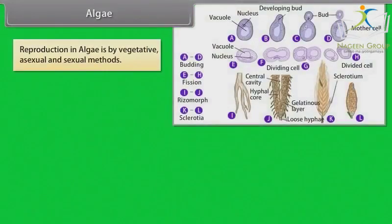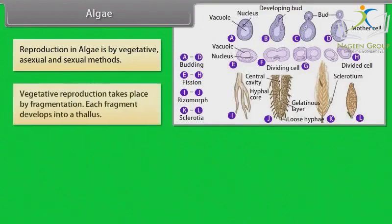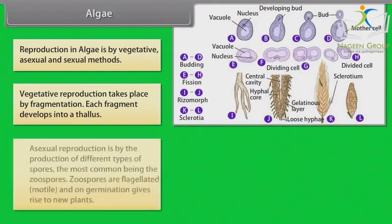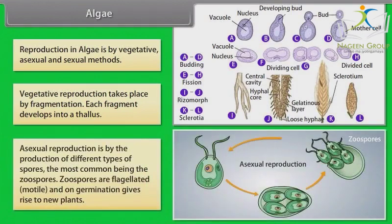Reproduction in algae is by vegetative, asexual, and sexual methods. Vegetative reproduction takes place by fragmentation; each fragment develops into a thallus. Asexual reproduction is by the production of different types of spores, the most common being zoospores. Zoospores are flagellated and motile, and on germination give rise to new plants.